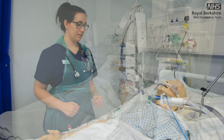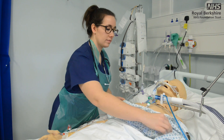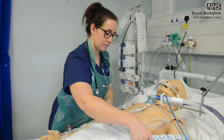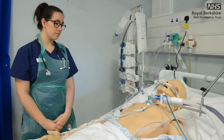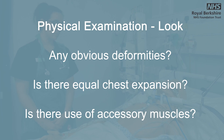The first thing to do is expose the chest. Are there any obvious deformities? Is there equal chest expansion? Are there use of accessory muscles? Assess your patient's rate, rhythm and quality of respirations. Red flags include paradoxical movement of the chest wall — only one side moving — or not synchronising with the ventilator, i.e., is the patient fighting the ventilator? Are they breath stacking? The ventilator will alarm.